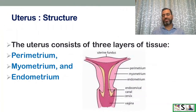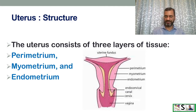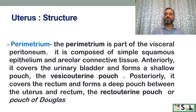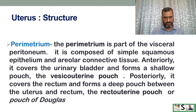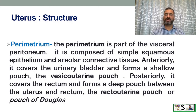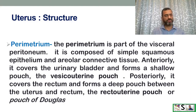The uterus consists of three layers: perimetrium, myometrium, and endometrium. The perimetrium is part of the visceral peritoneum, composed of simple squamous epithelium and areolar connective tissue. Anteriorly it covers the urinary bladder, forming the vesico-uterine pouch. Posteriorly it covers the rectum, forming the recto-uterine pouch, also known as the pouch of Douglas.